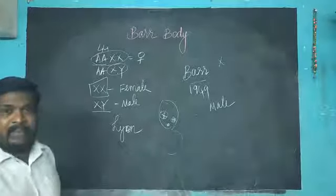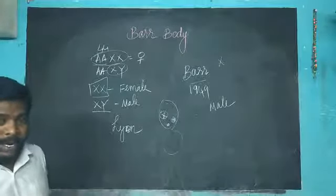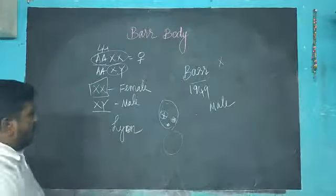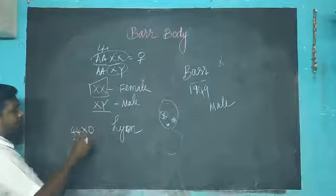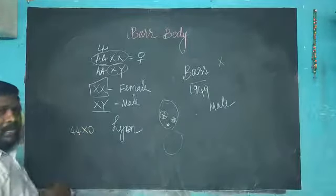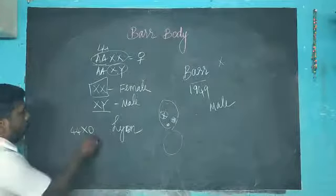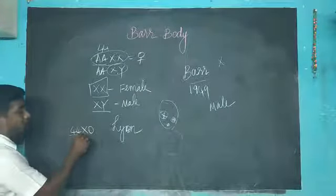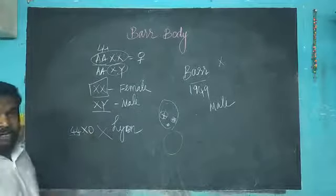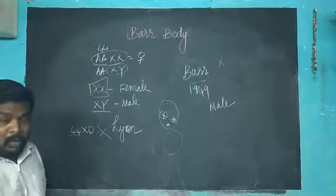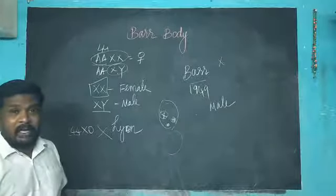For example, 44+X0 is a transgender condition. This is transgender because if two X chromosomes are there, 50% of the X chromosome will auto-condense and develop into a Barr body, another 50% represents the characteristic features. But here only one X chromosome, so no Barr body.